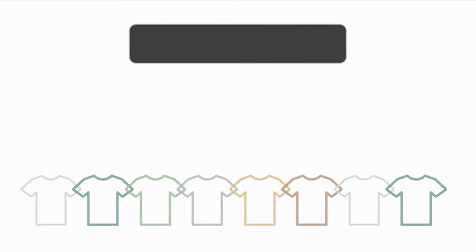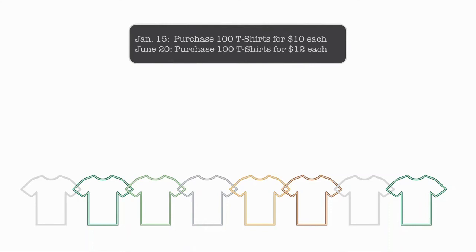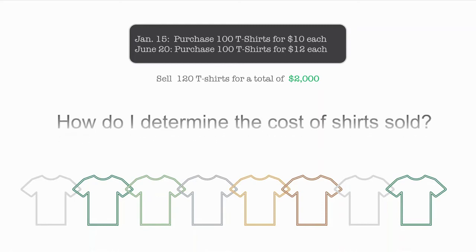So let's now assume we put some dates in our example. On January 15th, a company purchases a hundred t-shirts and they pay $10 a piece for each t-shirt. Then on June 20th, the company purchases an additional hundred t-shirts, and this time they paid $12. So the cost of those same t-shirts has gone up. They had to pay a little bit more later in the year. Then the same company throughout the year sells — we'll say June 30th — 120 of the total t-shirts for a total revenue of $2,000. How do I determine the total amount of cost of shirts sold when we paid two different prices at two different times during the year?